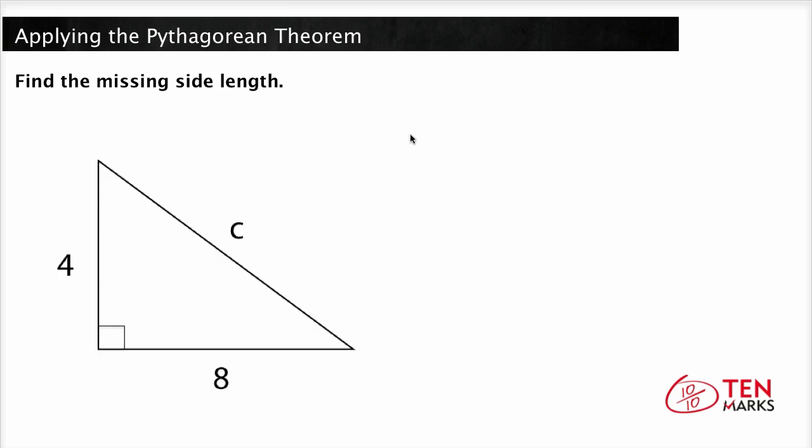We need to find the missing length of this figure below. So first, let's look at this triangle. Since it's a right triangle, you can use the Pythagorean theorem to find the length of this hypotenuse. Here, a equals 4 and b equals 8.